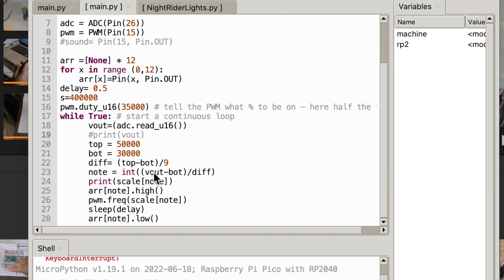And then the note was the integer of the V out minus the bottom divided by diff. Okay, there's a little bit of math here. What I'm doing, integer makes it a whole number. V out was what we read actually minus the bottom, which is 30,000. And we divide it by the difference, which is how much it goes up the scale. If you take that minus that and divide it by nine, that's the difference. So what is that? 20,000 divided by nine, it's about 3,000 each. And so we're simply saying, for every 3,000 that we go up, we raise it by a note.